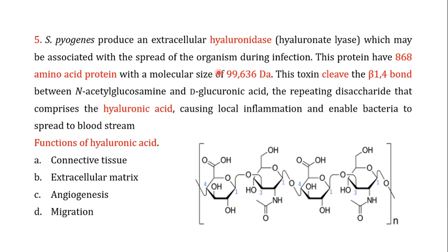S. pyogenes also produces another important virulence factor — an extracellular enzyme known as hyaluronidase. This enzyme is associated with the spread of the organism during infection. It is made up of 868 amino acids with a molecular size of 99,636 daltons. What this enzyme does is cleave the β1-4 bond of hyaluronic acid, and when it cleaves this bond it causes local inflammation and enables the bacteria to spread to the bloodstream.